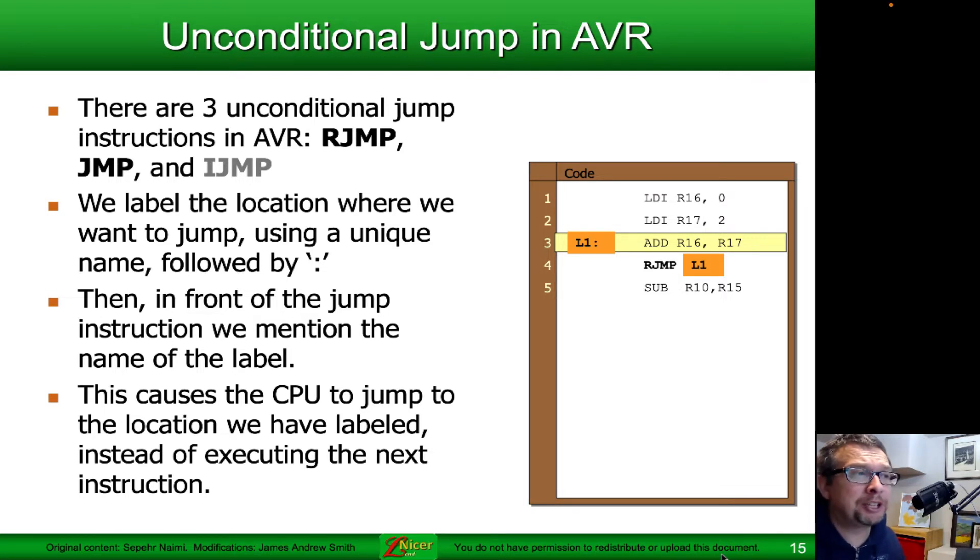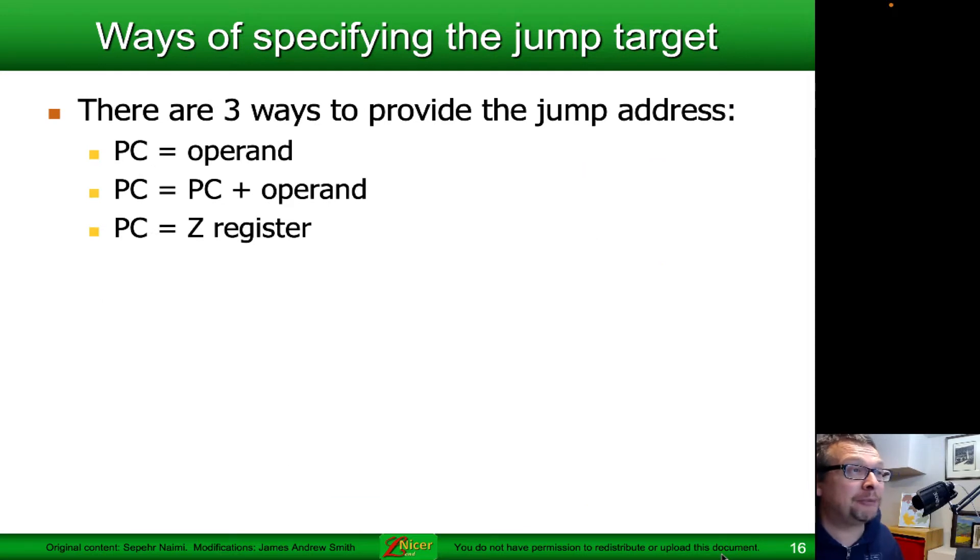Then in front of the jump instruction, we mention the name of the label, and the assembler will figure out what that label is really supposed to be in terms of memory. This causes the CPU to jump to the location that we have labeled instead of executing the very next instruction. So it looks like this: you see that L1 label. If I have RJMP or jump followed by a label, it will go back to the line labeled by that label.